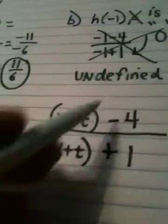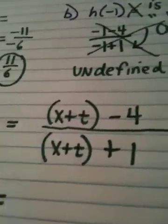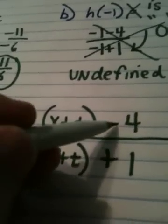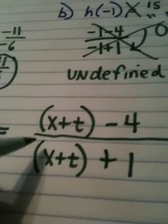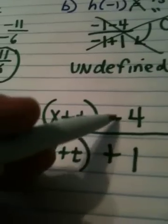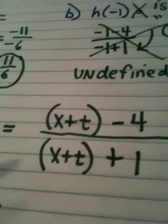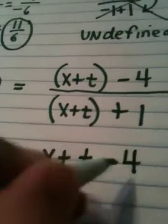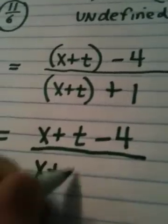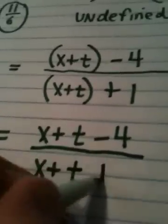Now, sometimes I see students get this far, and then they go, oh, look, those cancel. That's not happening. With a minus and a plus, you can't just randomly cancel pieces. You can only cancel when it's multiplication. And that's not multiplication here. It's subtraction and it's addition. So, the numerator becomes x plus t minus 4, and the denominator becomes x plus t plus 1.